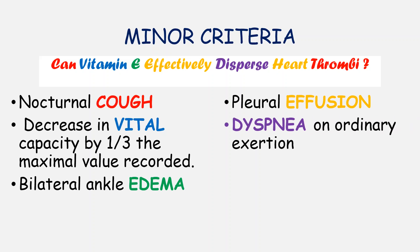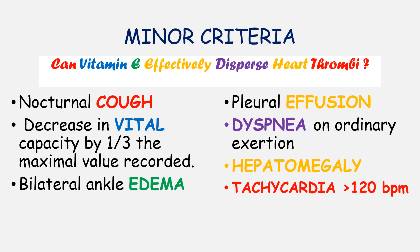D stands for dyspnea on ordinary exertion — the criterion is met if the patient becomes breathless on ordinary exertion, such as walking a short distance or performing a task as minor as dressing up. H stands for hepatomegaly. T stands for tachycardia, which is a heart rate greater than 120 beats per minute.